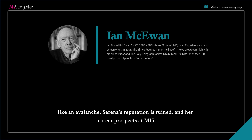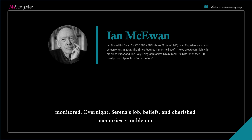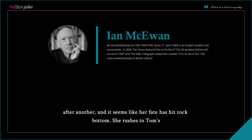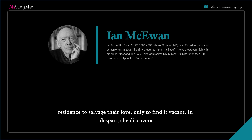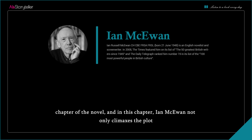Suddenly, sensational headlines about this newly celebrated author being a puppet of MI5 fill the newspapers. Photos of Tom and Serena embracing on the beach are published, and reporters describe Serena as Tom's sexy spy. Everything accelerates irreversibly like an avalanche. Serena's reputation is ruined, and her career prospects at MI5 come to a halt. Her mentor Tony is posthumously revealed to have a record of betrayal, meaning Serena herself is never fully trusted. Overnight, her job, beliefs, and cherished memories crumble. She rushes to Tom's residence to salvage their love, only to find it vacant—and discovers a letter from Tom in the kitchen. This lengthy letter comprises the final chapter of the novel, in which McEwan not only climaxes the plot but also executes a remarkably clever twist.